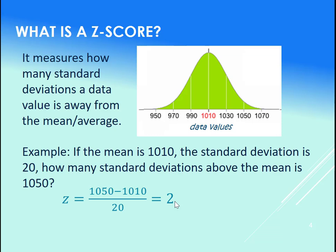And let's see where that is here—right here. You could also just count it if you knew that your standard deviation is 20. You could start at the 1010 and go, okay, one standard deviation above is 1030, another one above is 1050.